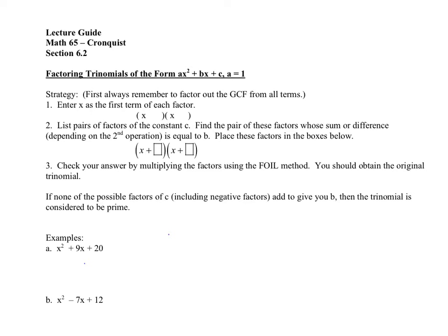Always remember to factor out the GCF from all terms — this is the very first thing we do. Number one, factor them out. Number two, enter x as the first term of each factor, so we set up two parentheses with an x at the beginning. Number three, we list pairs of factors of the constant c — that's your trailing constant. List pairs of those factors and find pairs whose sum or difference,